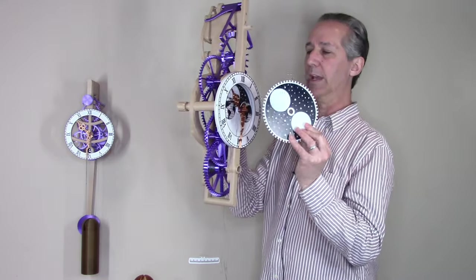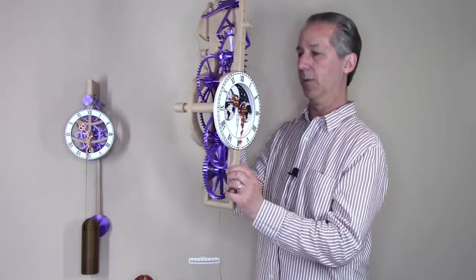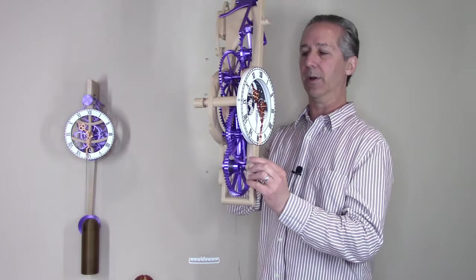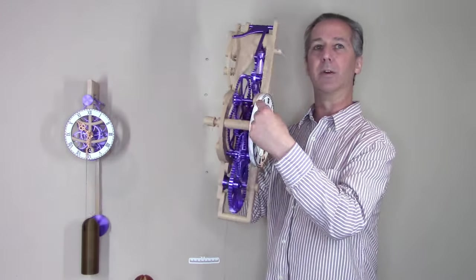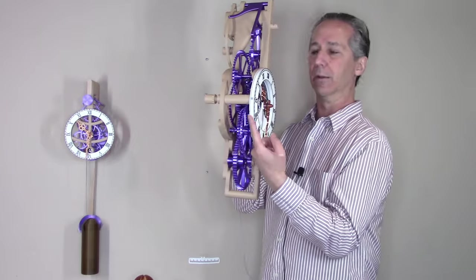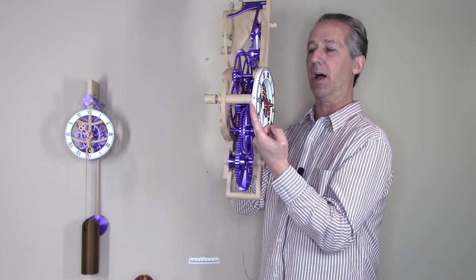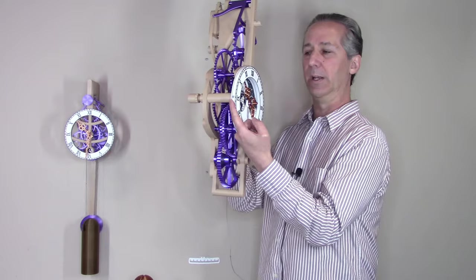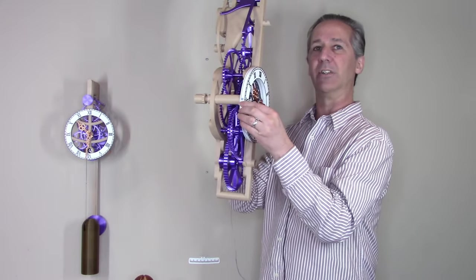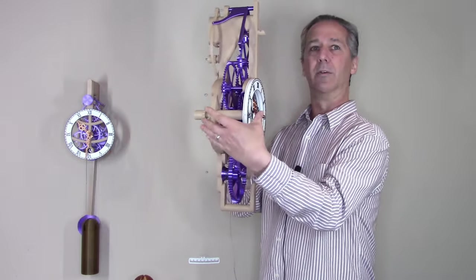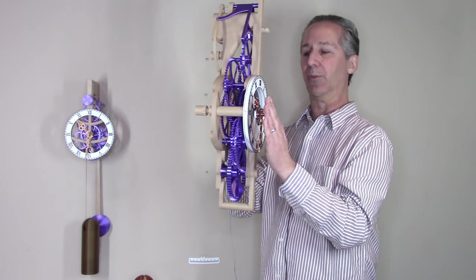The new moon phase dial is powered off of the hour hand gear, which is already really close to the front of the clock. And if that is going in front of that, that was a challenge to design it without growing the clock so that it would be really thick.